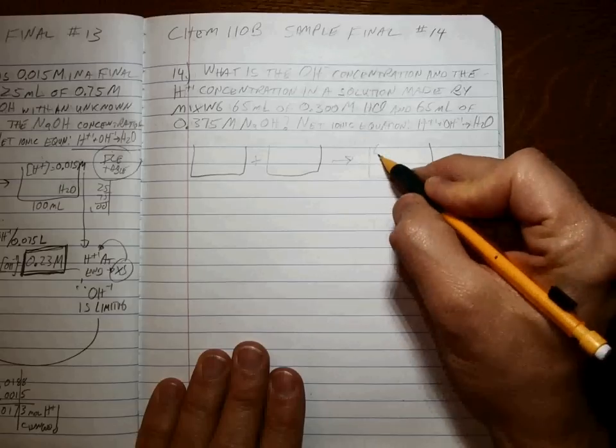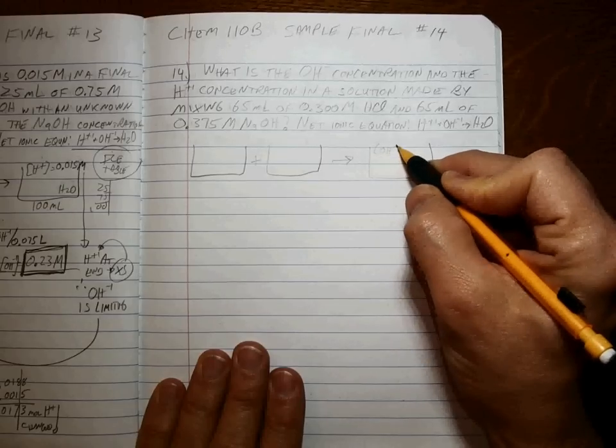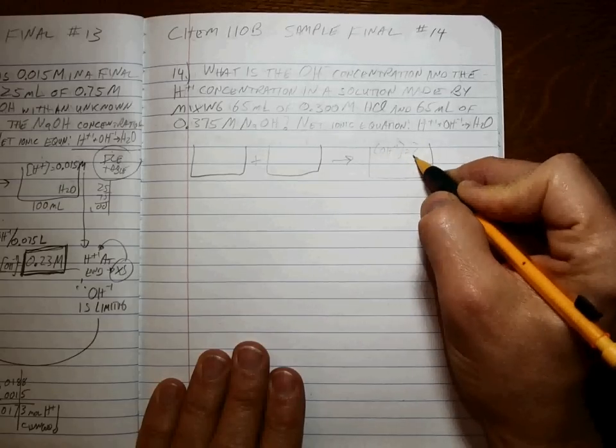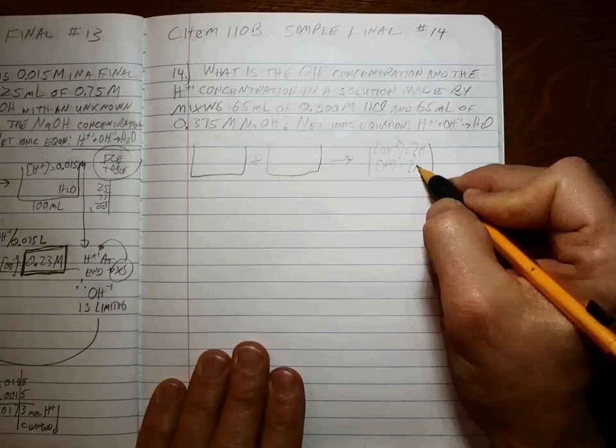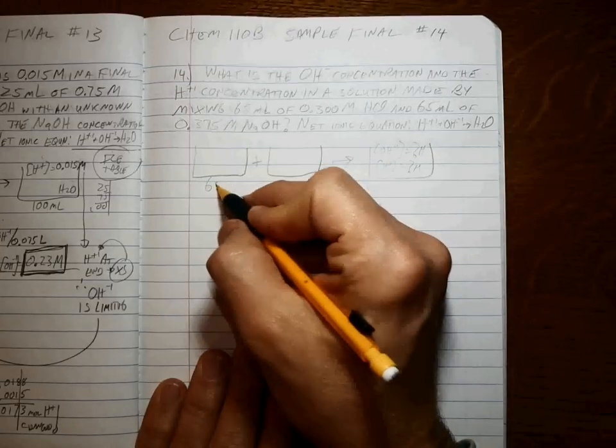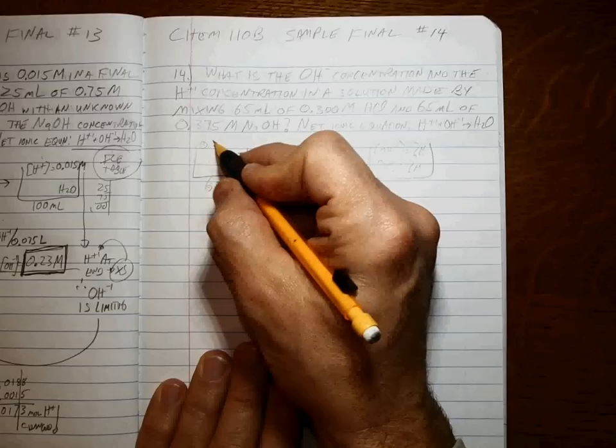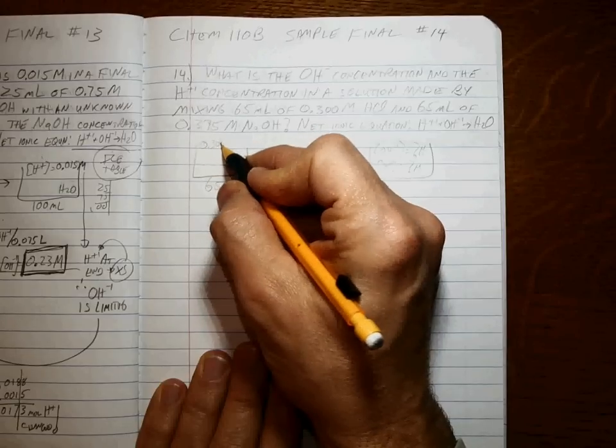So they want to know what the hydroxide concentration is and the H-plus concentration at the end for a solution made by mixing 65 milliliters of 0.300 molar HCl